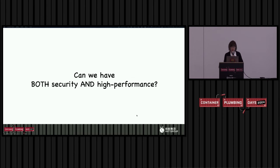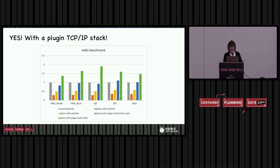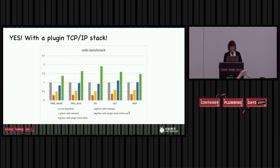Is there any way we can get both security and high performance? The answer is yes, with a plug-in TCP/IP stack. Below is the same Redis benchmark tested on GVisor with our plug-in network stack. There are two different modes: the first is VirtIO user, and the second is VFIO. VirtIO user still needs some VirtIO driver support in the Linux kernel, while VFIO does device pass-through. Even with VirtIO user, it can get almost the same network performance as RunC, and with VFIO it can get about 1.5 times better than RunC.